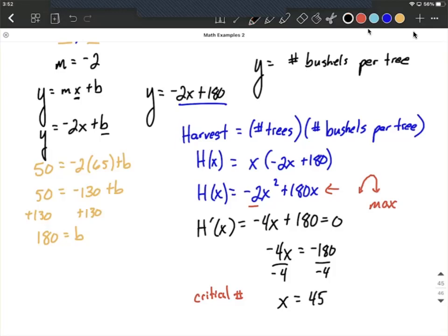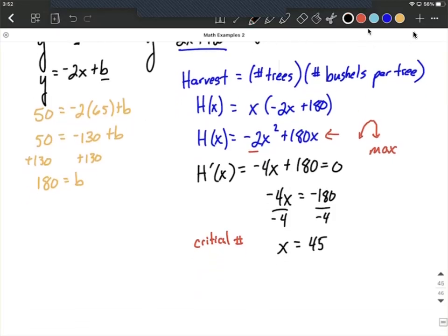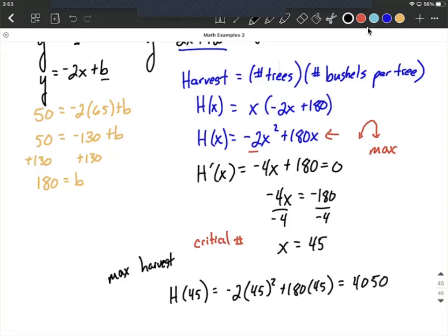Now, if we did want to go ahead and answer one additional question, what's her maximum harvest going to be? We found the critical value that she should be planting 45 trees per acre. But if we wanted to go one step further and figure out how many bushels is she going to get, we can go back and plug in 45 into the harvest function that we created. So that's going to be negative 2 times 45 squared plus 180 times 45. She should expect to have 4,050 bushels at the end of the harvest.